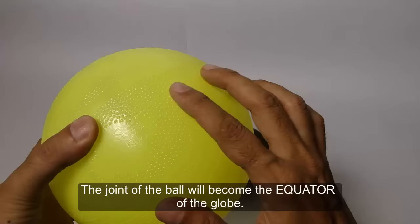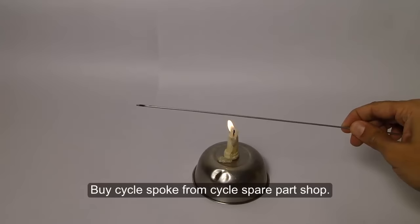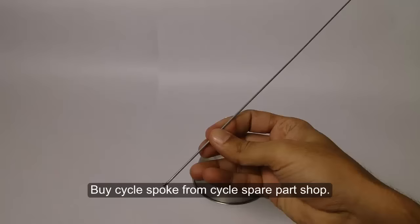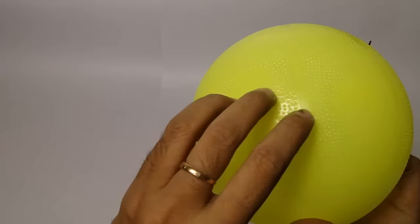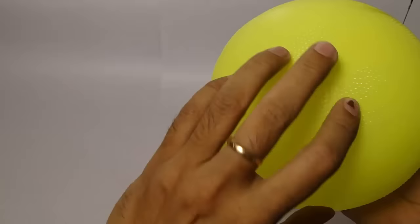On this ball, you can also find the equator. Now make markings on the ball where you want to insert the spoke.